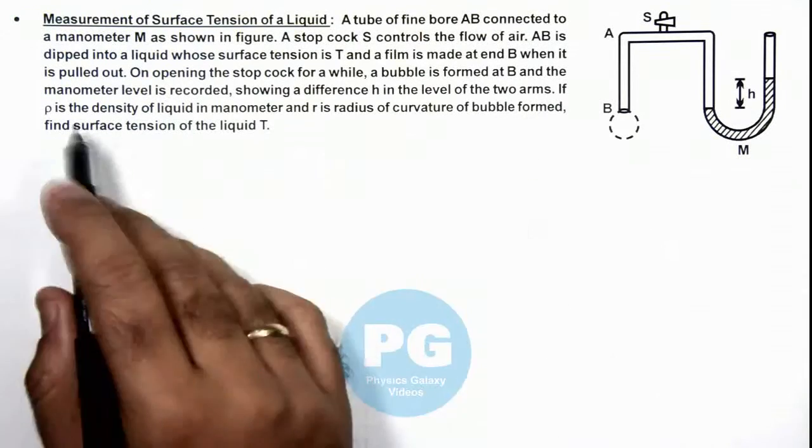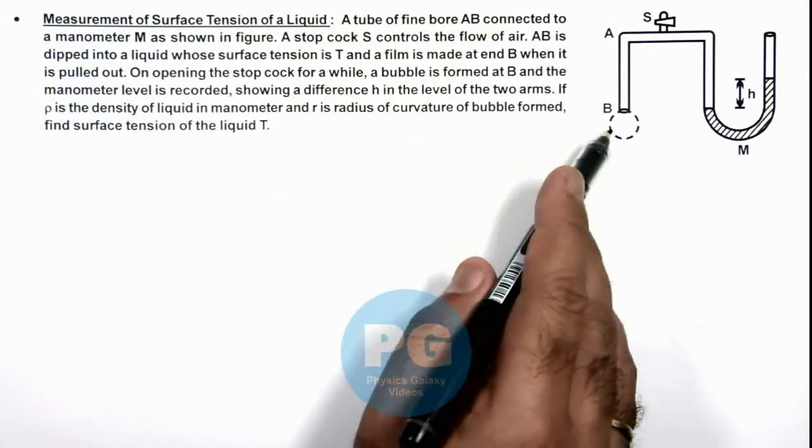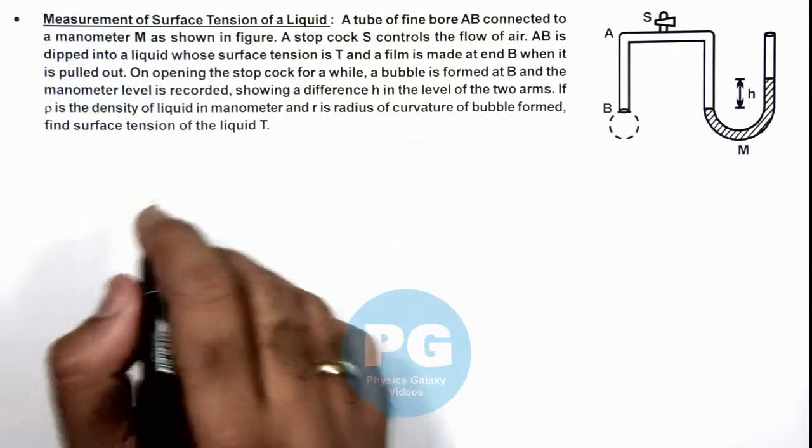If ρ is the density of liquid in manometer and r is the radius of curvature of this bubble formed, we are required to find the surface tension of the liquid.